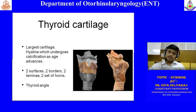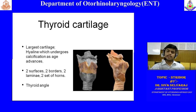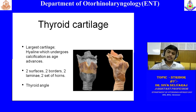The thyroid cartilage has an outer and inner surface. The outer surface has right and left laminae, each with an oblique line where suprahyoid and infrahyoid strap muscles attach. It has two sets of horns: superior horns and inferior horns — the inferior horns articulate with the cricoid cartilage at the cricothyroid joint.